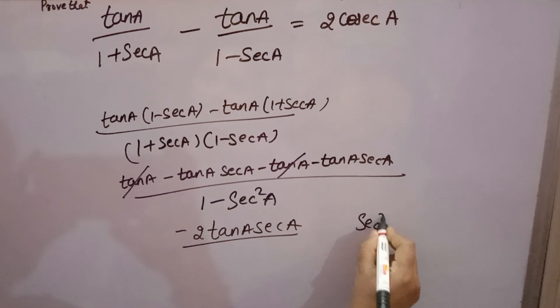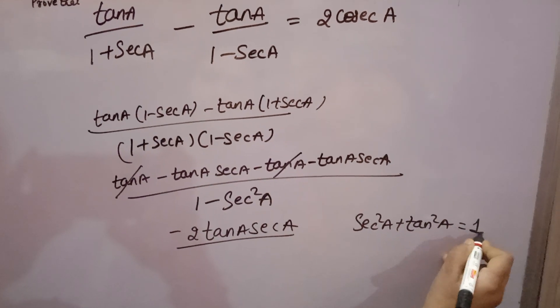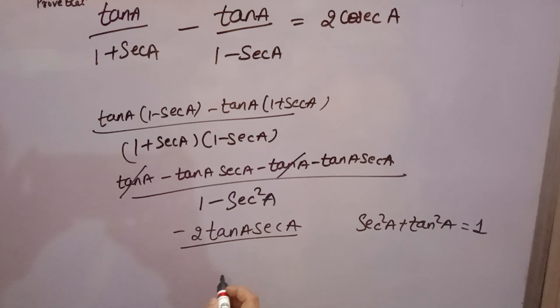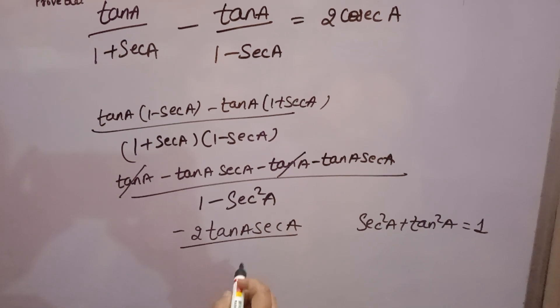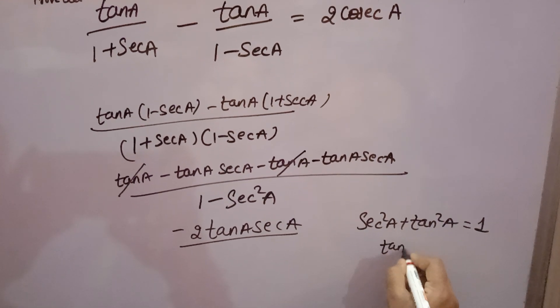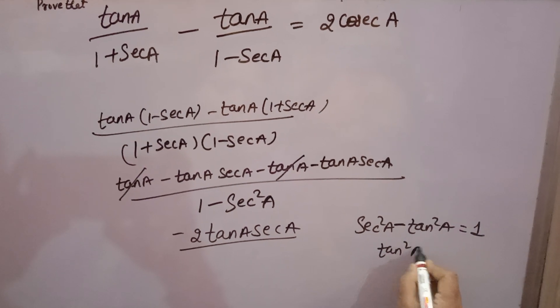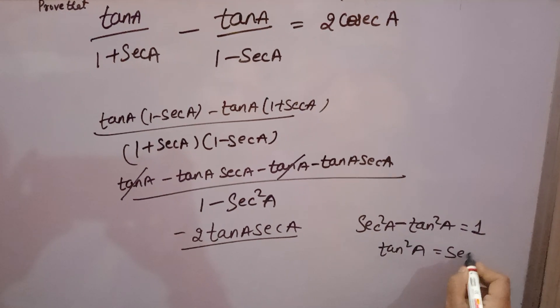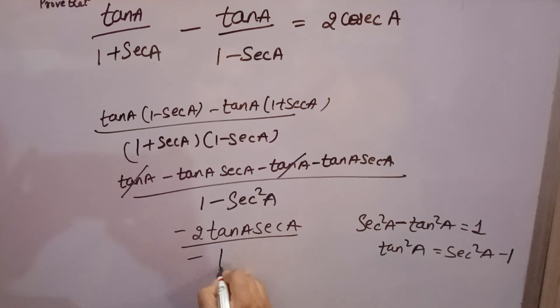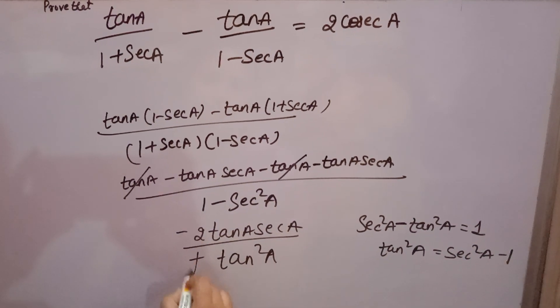Now you know that sec square A minus tan square A is equal to 1. That means 1 minus sec square A equals minus tan square A. Here 1 minus sec square A is there, so minus tan square A will come. So minus minus cancel.